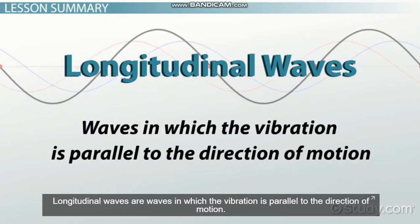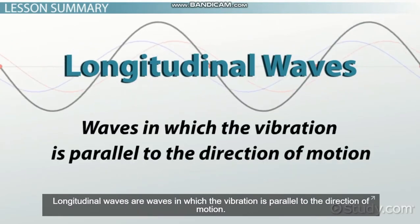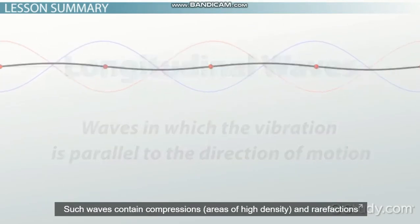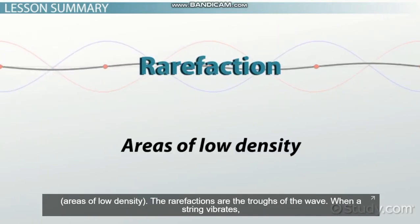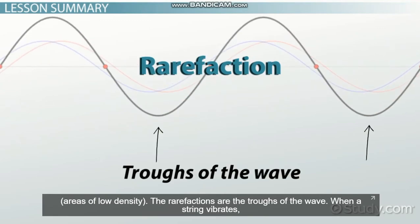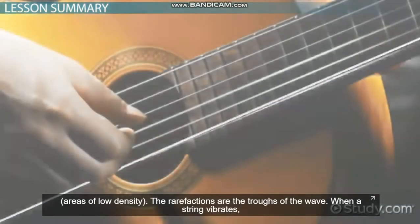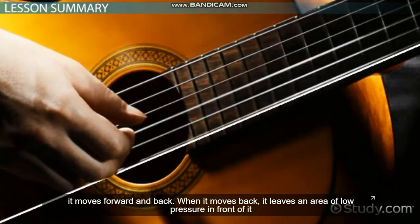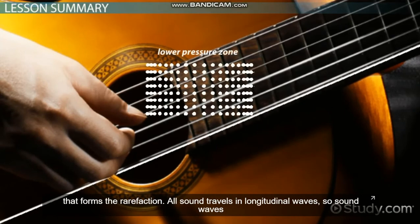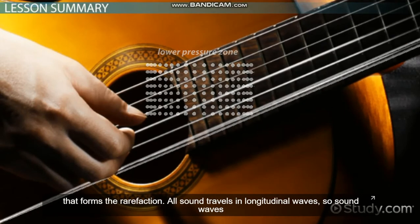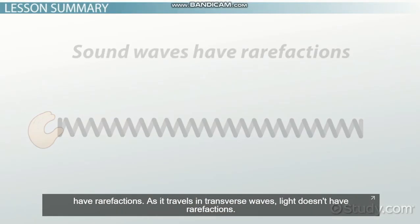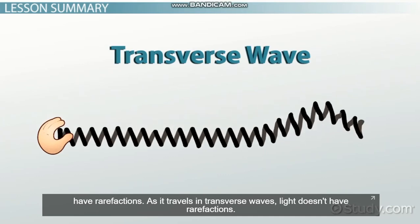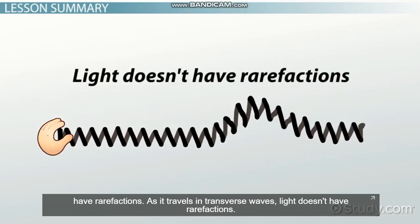Longitudinal waves are waves in which the vibration is parallel to the direction of motion. Such waves contain compressions — areas of high density — and rarefactions — areas of low density. The rarefactions are the troughs of the wave. When a string vibrates, it moves forward and back; when it moves back, it leaves an area of low pressure in front of it that forms the rarefaction. All sound travels in longitudinal waves, so sound waves have rarefactions. As light travels in transverse waves, light doesn't have rarefactions.